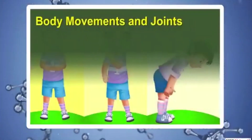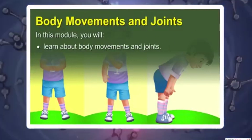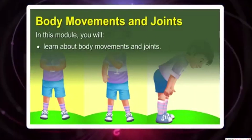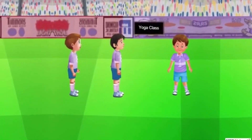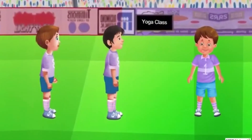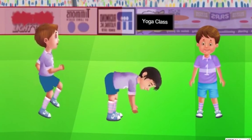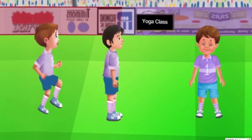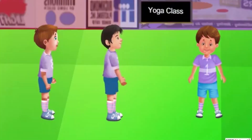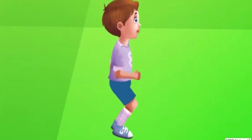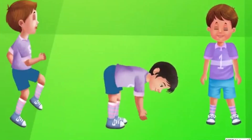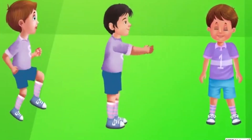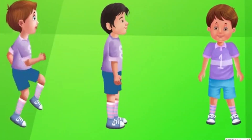Body movements and joints. In this module we will learn about body movements and joints. You do different exercises in school, and for doing these exercises you do different types of movements, for example moving your arms and legs forward, bending, shoulder rotation, and many more. You can do these movements easily because your body is flexible.